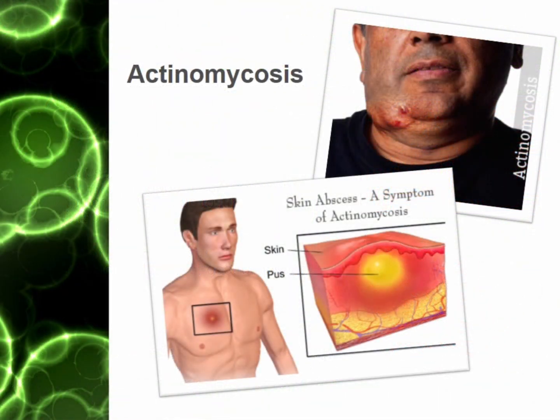Here is what actinomycosis looks like. You can see the spot on the face, then a spot on the chest wall. In the bottom picture we can see the abscess and the part inside our skin — the yellow part which is called pus. When pus builds up there is swelling on the skin and it causes pain as well. These are known as abscesses, and this is what happens when you have actinomycosis.